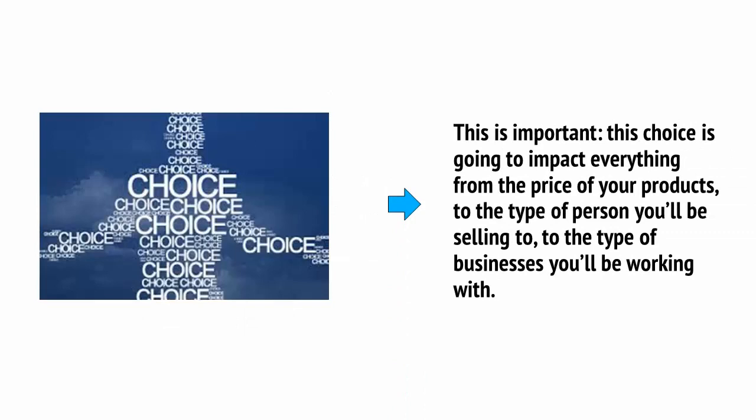This is important. The choice is going to impact on everything from the price of your products, to the type of person you'll be selling to, to the type of businesses you'll be working with. The reason we call it a niche — or niche as some people pronounce it — when talking about an online business, is that a niche is a particular category. This is not only your subject matter, but also the type of person who is going to be reading your content.